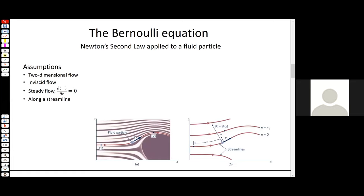Now we're going to take this concept of a streamline — a line through space where the fluid velocity is everywhere tangential — and apply Newton's second law to a fluid particle traveling along a streamline. Our assumptions: the flow is two-dimensional in the plane, we have no viscous forces, the flow is steady so no quantity is changing with time, and the fluid particle is traveling along a streamline.